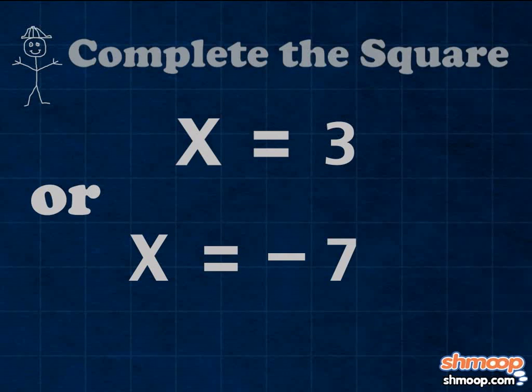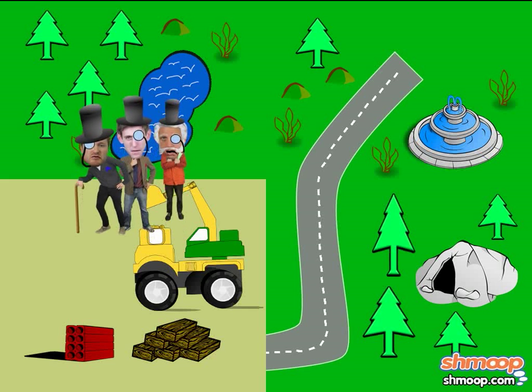And there you have it. The equation for the square is complete, and Pocket Square is complete as well.